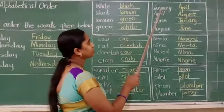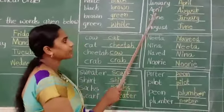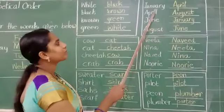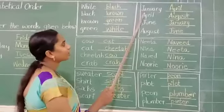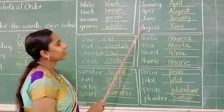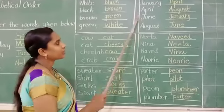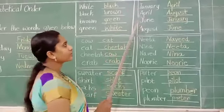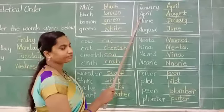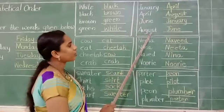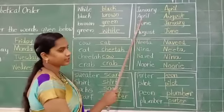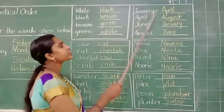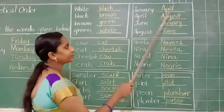Next one: January, April, June, August. What is this? Months in a year. So here also you can see J, A, J and A — two A's and two J's. Right children? So A will come first. Let's see April and August. See the second letter — here U is there, here B is there. So which one you should write first? April. Then after, August.